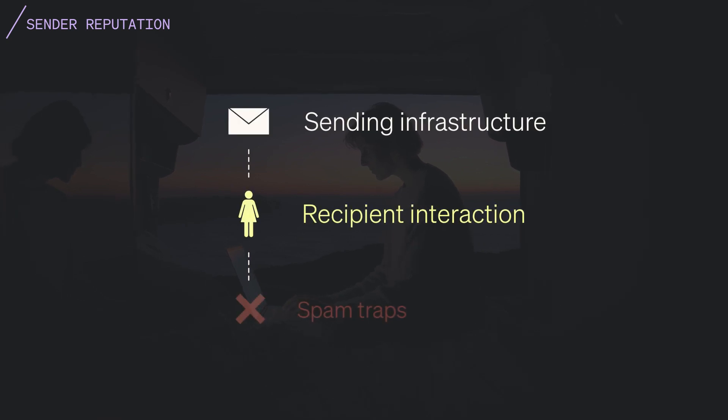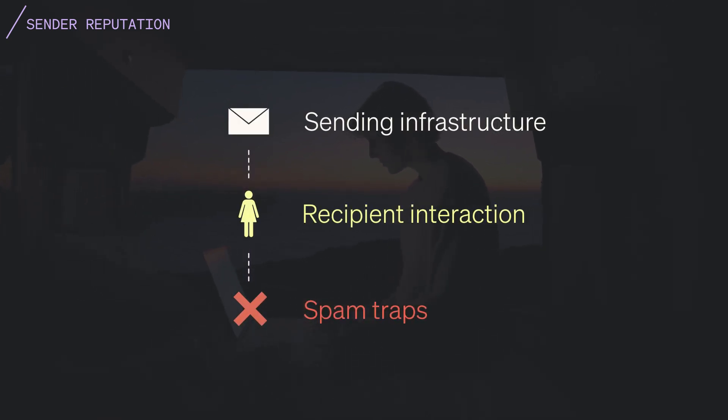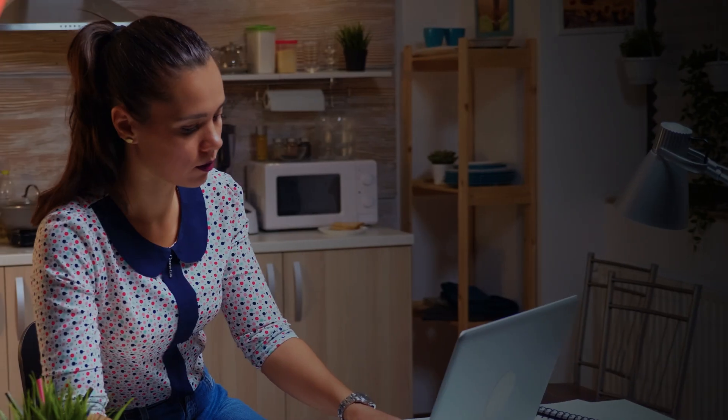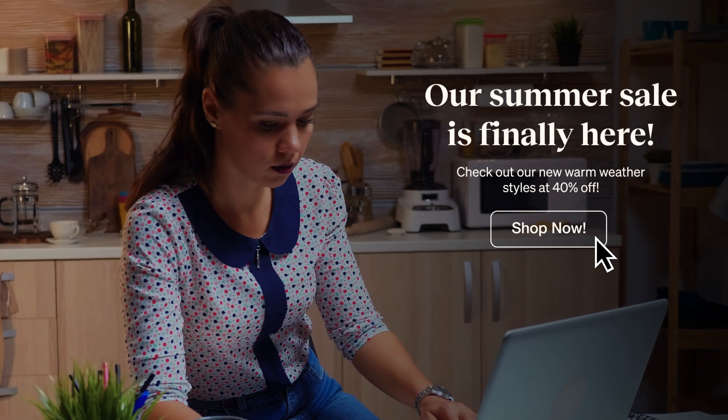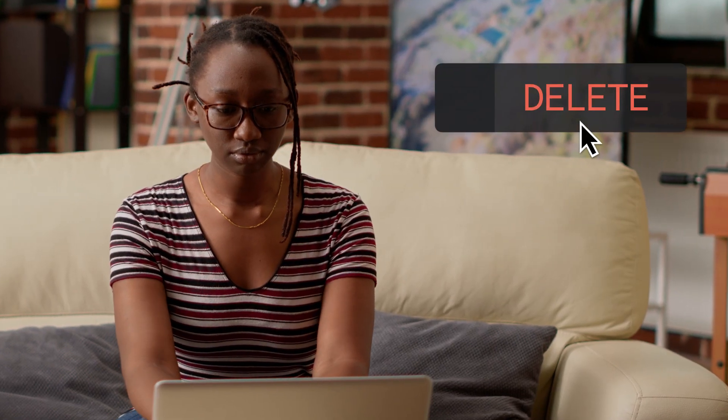Inbox providers watch all of these signals because they care about the user experience of their customers. By paying attention to your recipient's behavior, you can see who is interested in receiving your emails and who isn't. Use that information to remove unengaged recipients from your marketing and tailor your messaging based on your engaged recipients' interests. This reflects positively on your reputation and, as a result, your revenue.